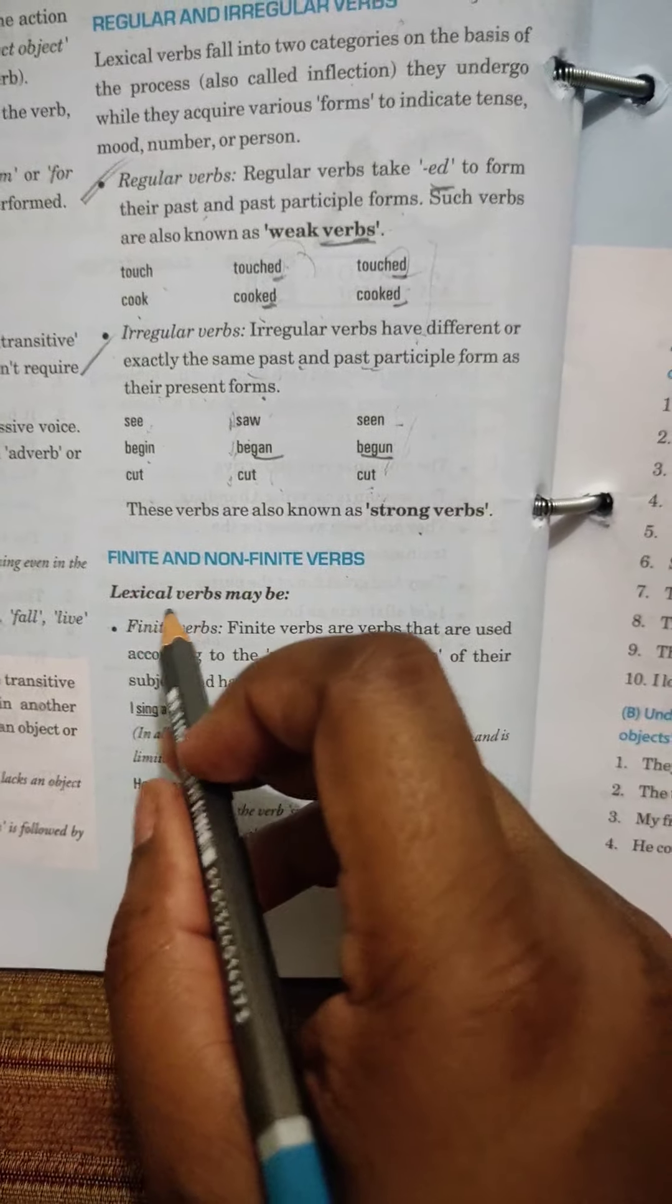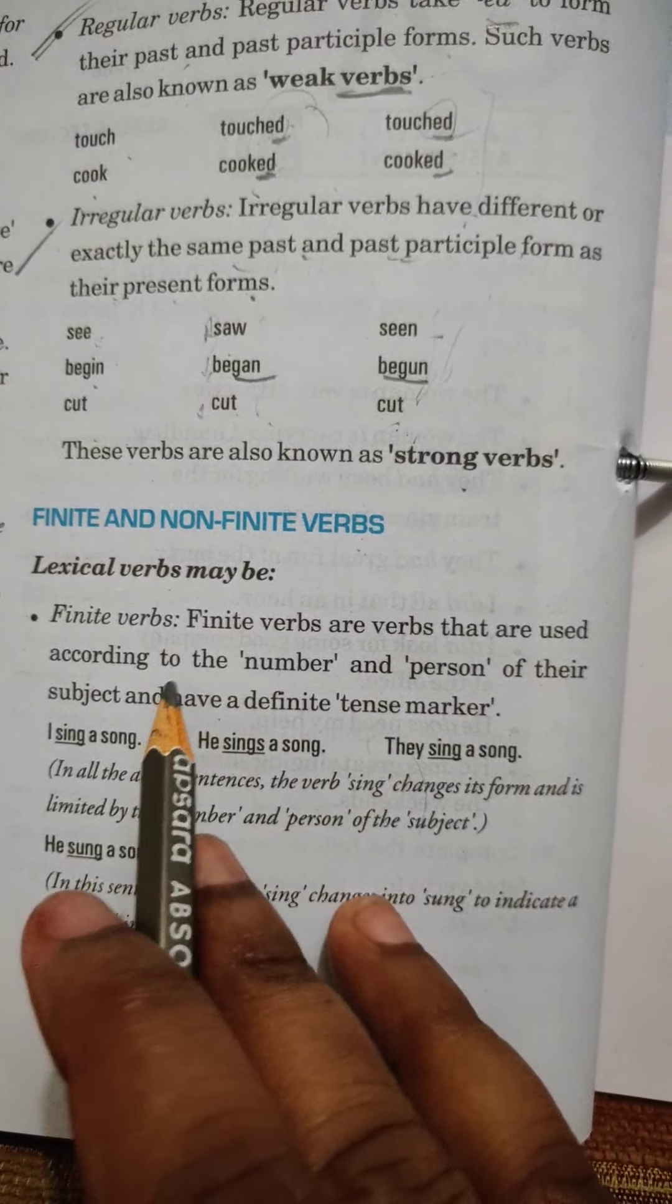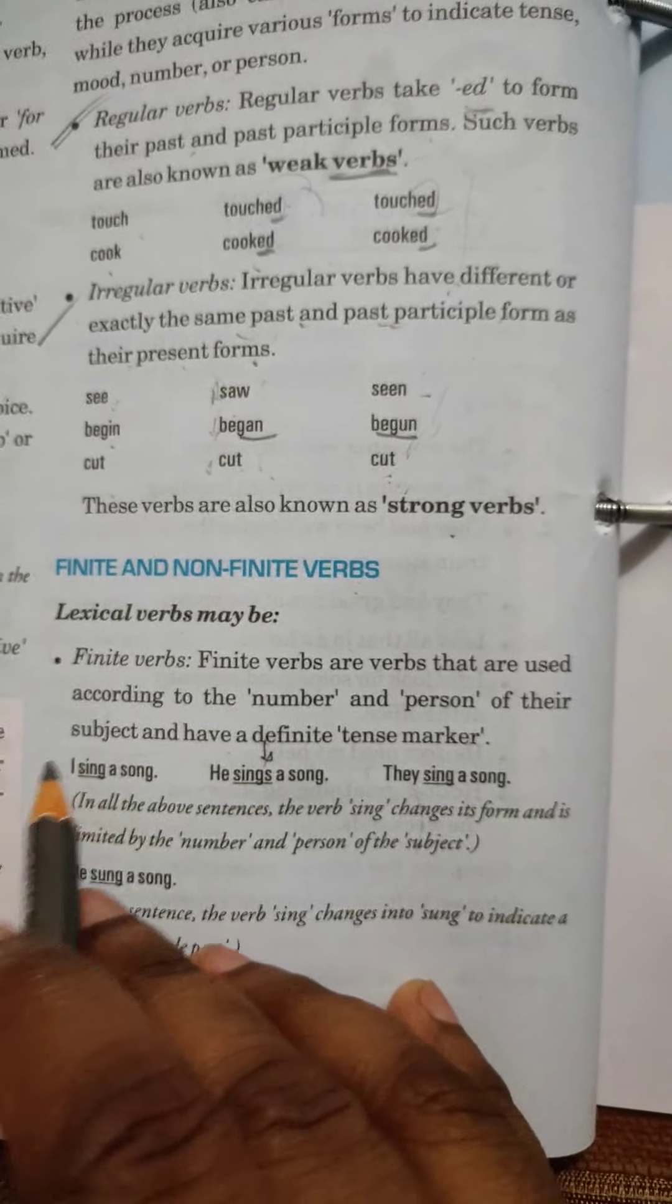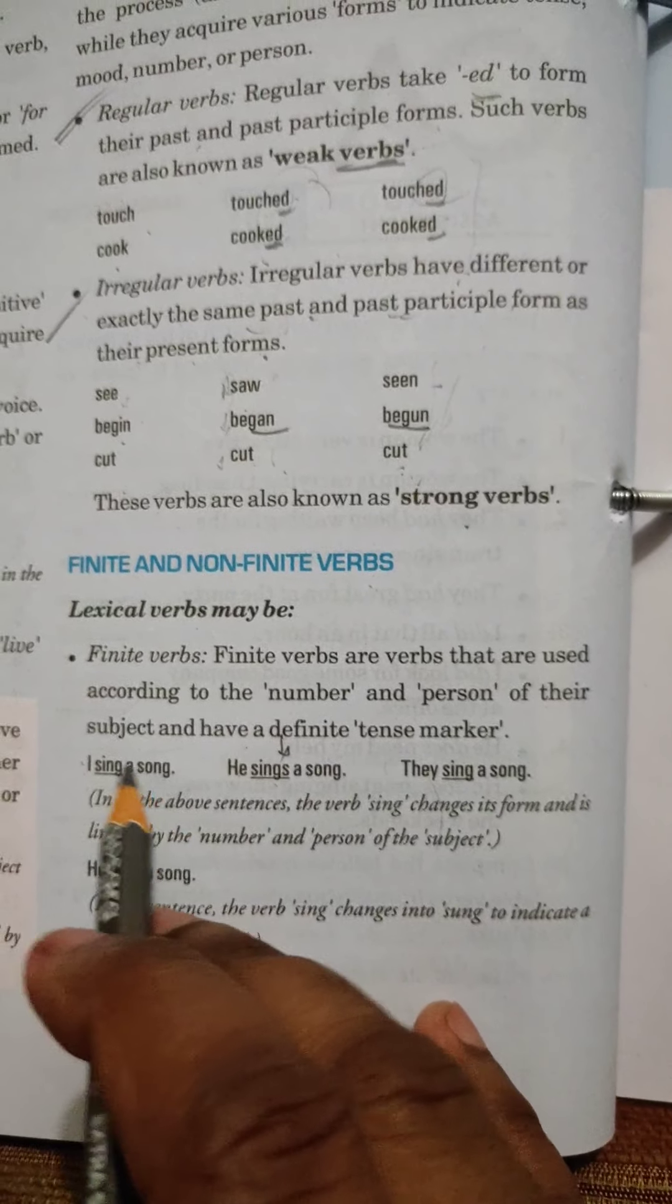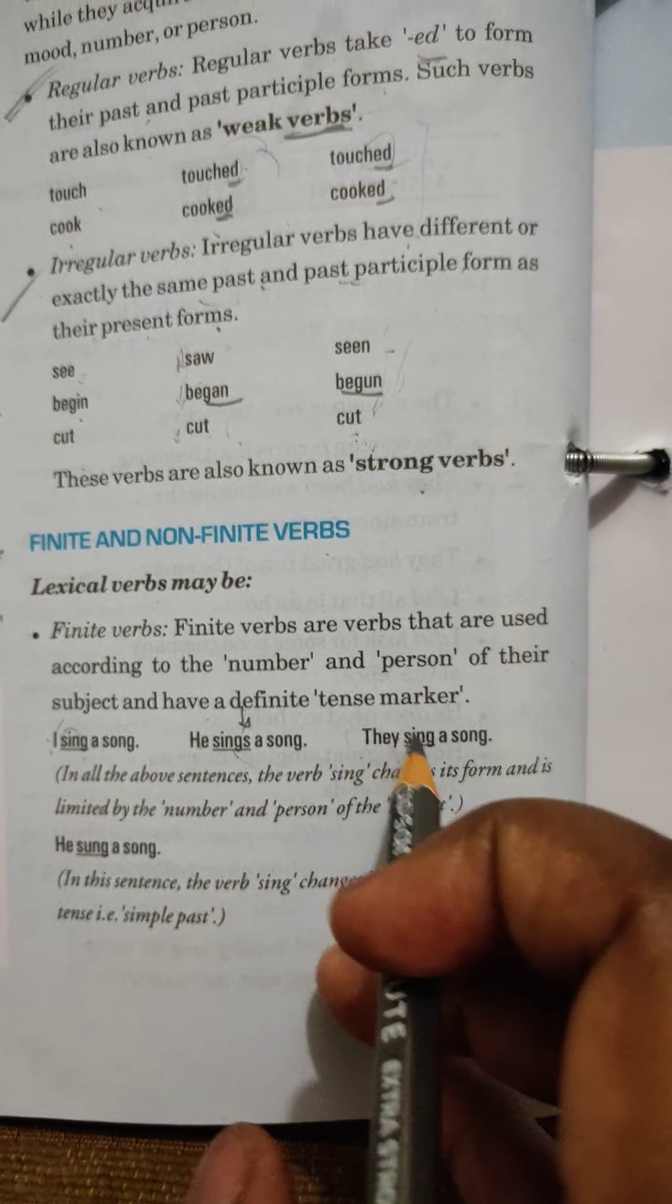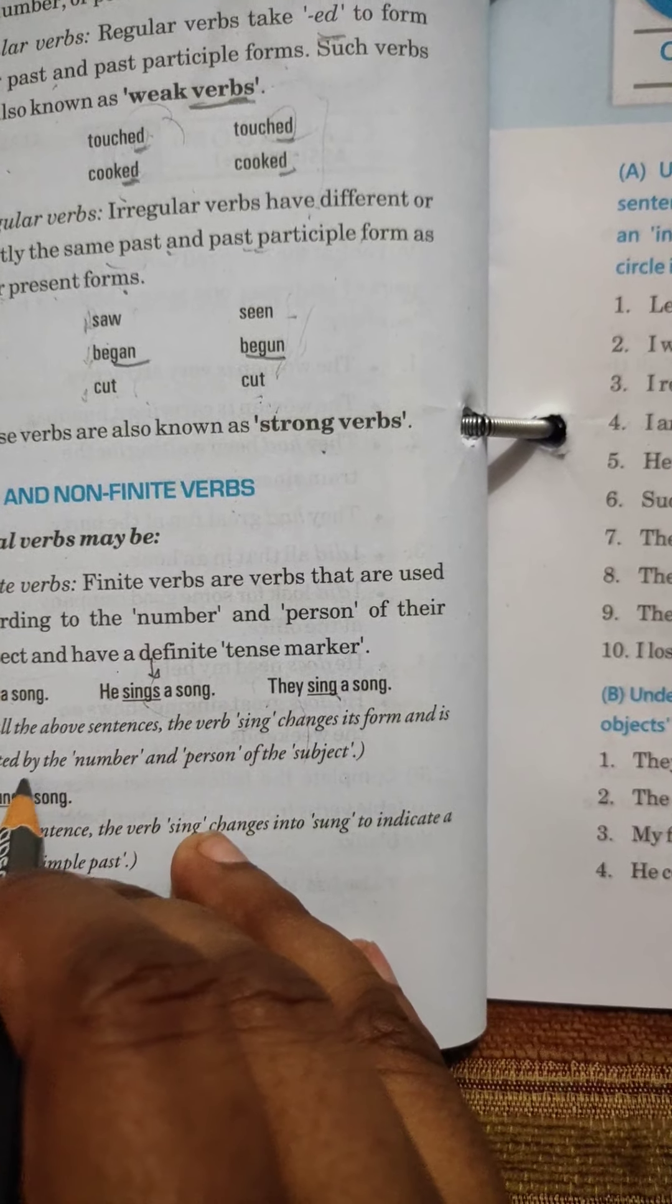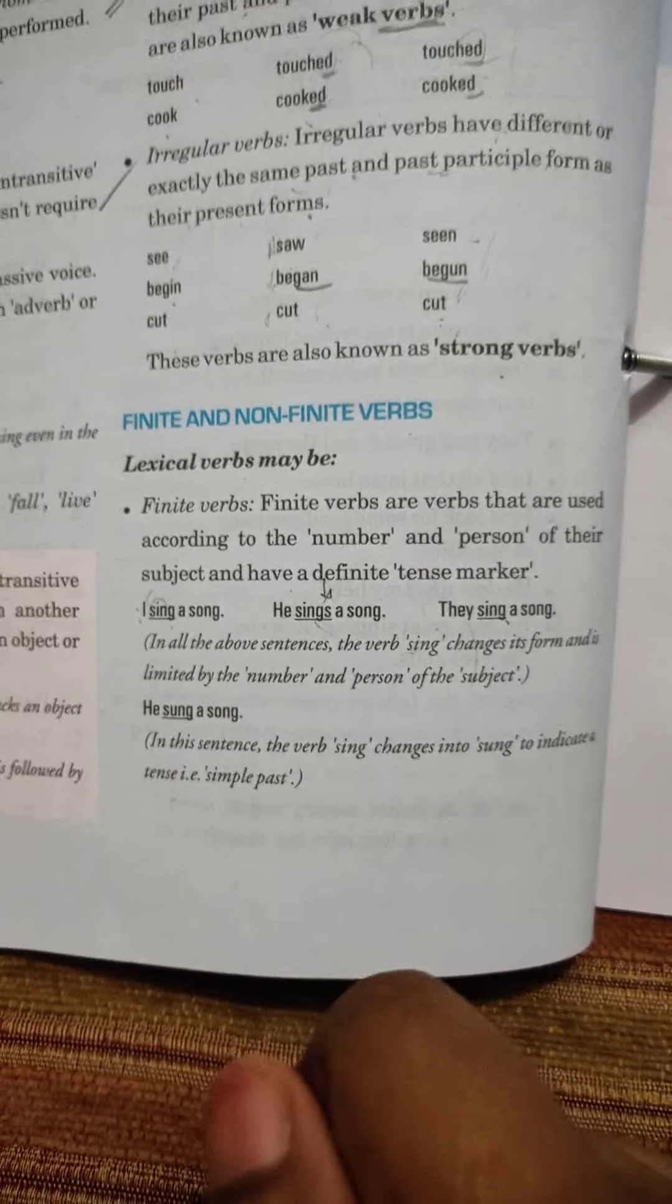Now, finite and non-finite. Lexical verbs may be finite or sometimes it may be non-finite also. Let us see. Finite verbs are the verbs that are used according to the number and person of their subject. For example, I sing, but he sings. It is not I sings or he sing, I sing, he sing, no. So, these are controlled by the subjects. I will always take sing, but he will always take sings, they sing. In all the above sentences, the verb sing changes its form and it is limited by the number and person of the subject. So, like this it goes. These are known as finite and non-finite verbs and non-finites here you are having the definition.